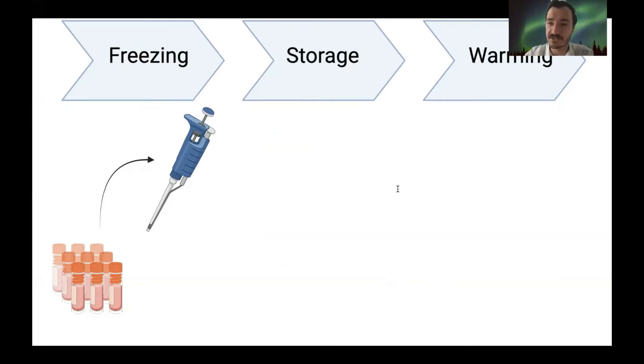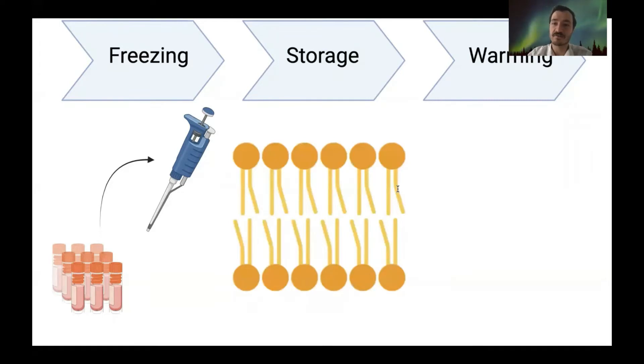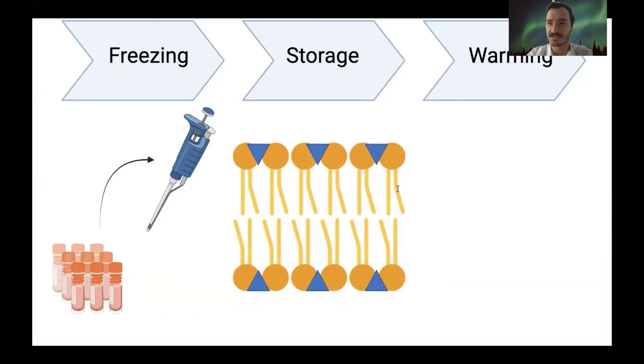Secondly, if we remember back to the membrane structure, the sugars that we've added - either trehalose, sucrose, something like that - actually insert themselves between the head groups of the phospholipids in the membrane. This prevents them from moving around and changing state. They don't go through that transition stage to a less stable fluid-like state. They maintain relatively stable.